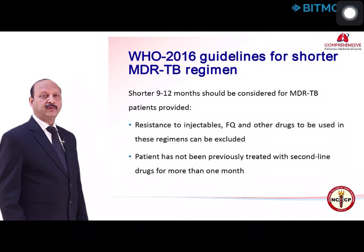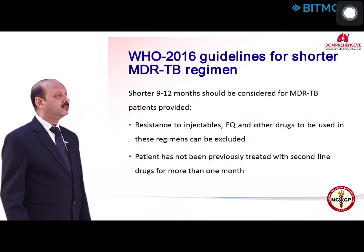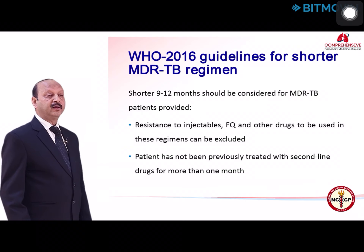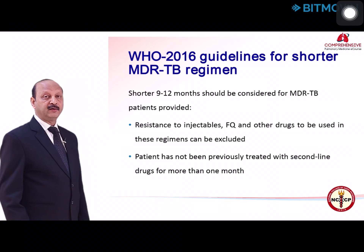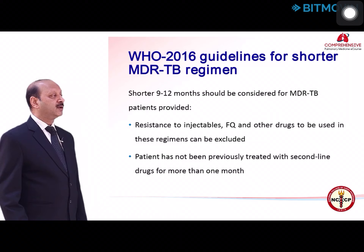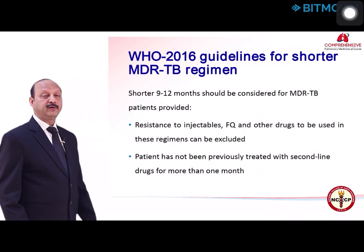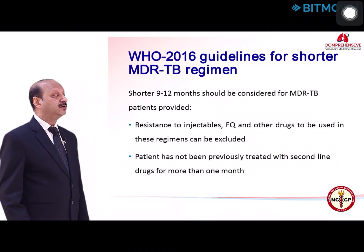There are also guidelines for a shorter MDR-TB regimen. In 2016, WHO issued guidelines to treat MDR-TB cases for 9 to 12 months, provided resistance to injectables, fluoroquinolones, and other drugs in this regimen can be excluded, and the patient has not previously used second-line drugs for more than one month. History should not suggest prior use of these drugs and there should be no resistance to them.